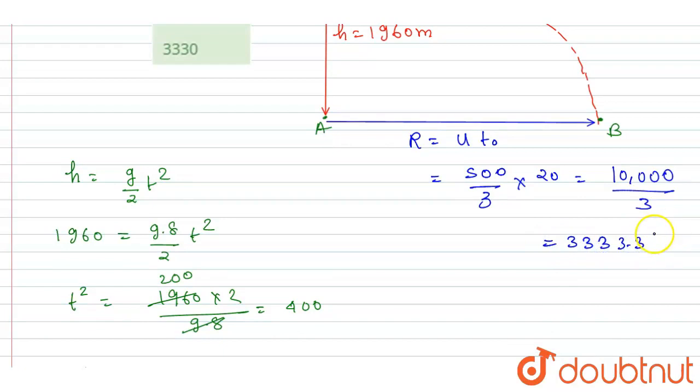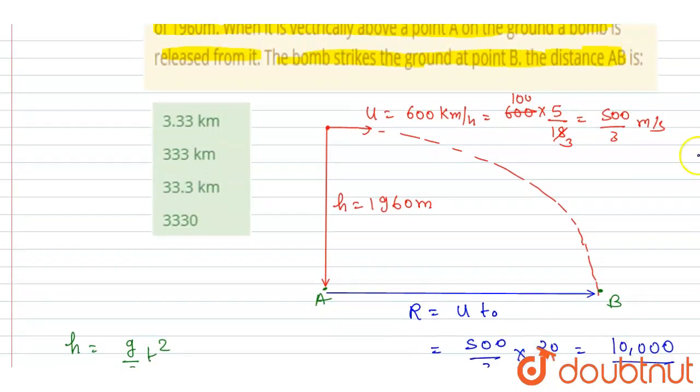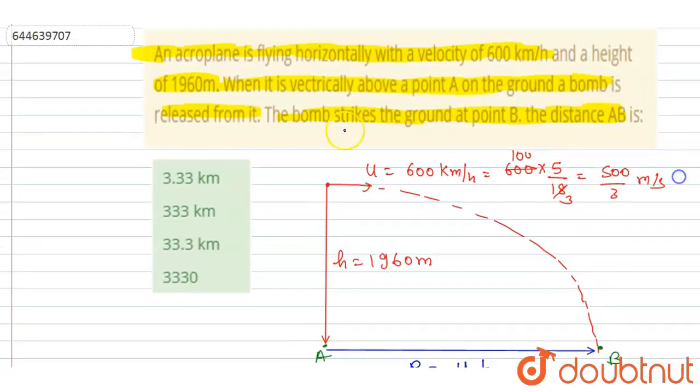That is nearly equal to 3333.3 meters. Now you can check for the option. If you see, the answers are in kilometers, so we got this answer in meters. You can convert it to kilometers by dividing it with 1000, so it will equal 10 by 3 kilometers. This is in meters, so it will be 3.33 kilometers. Now you can check for the option. So yes, A will be the correct option: 3.33 kilometers.